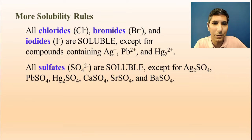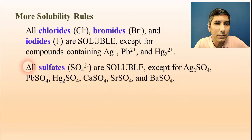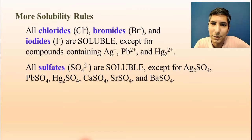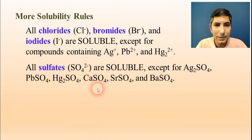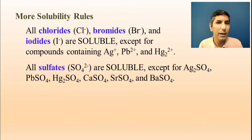Sulfates are also soluble almost all the time. There are six sulfate exceptions that are not soluble: silver sulfate, lead sulfate, mercury(I) sulfate, calcium sulfate, strontium sulfate, and barium sulfate. Three of those six exceptions — silver, lead, and mercury — are the same exceptions as for chlorides. The other three — calcium, strontium, and barium — are your heavier Group 2 elements, so you can remember them by looking at the bottom of Group 2 on the periodic table.